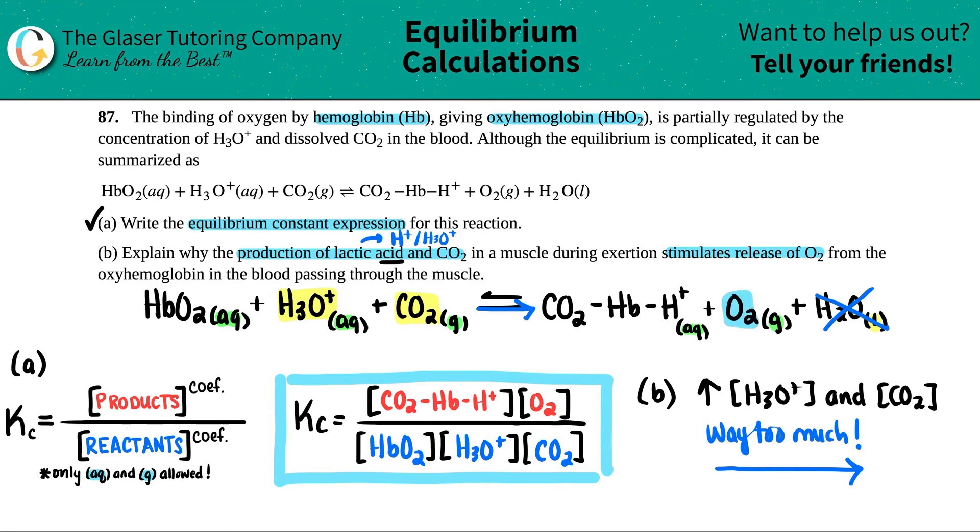So when you are favoring the forward reaction, you will be producing more O2. And that's why it stimulates the release of O2. You are favoring the forward reaction. So forward reaction is favored. So if the forward reaction is favored, that is going to allow you to have an increase of the concentration of O2. And that's why O2 is being released. Being released means produced. So this is all coming back to Le Chatelier's principle.